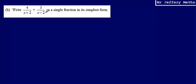What we know about adding fractions is that we must have the denominators the same. What we can see here is that we don't have that at the moment. We've got x+2 for one denominator and x-2 as the other denominator.